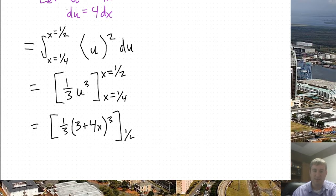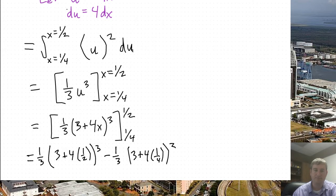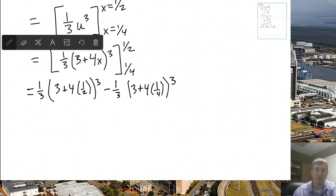And now I can drop the x equals because we know those are x values. It's the only variable involved. And then I can finally plug in top minus the bottom, 1/3, 3 plus 4 times 1/2, all cubed, minus 1/3, 3 plus 4 times 1/4, all cubed.